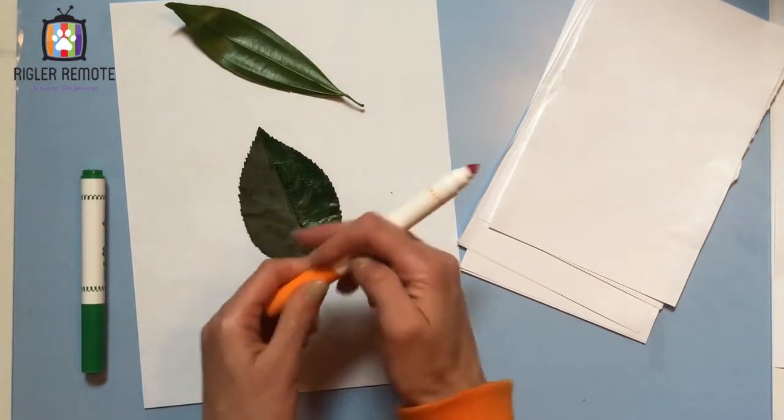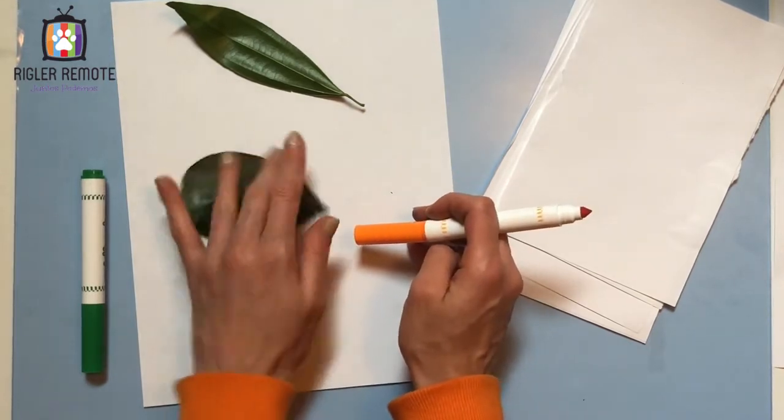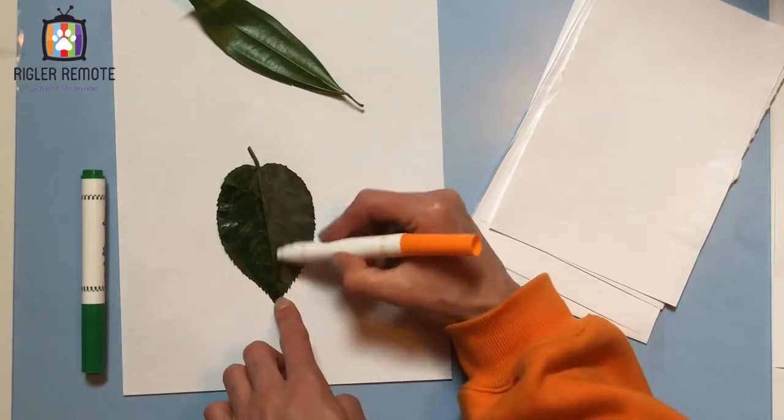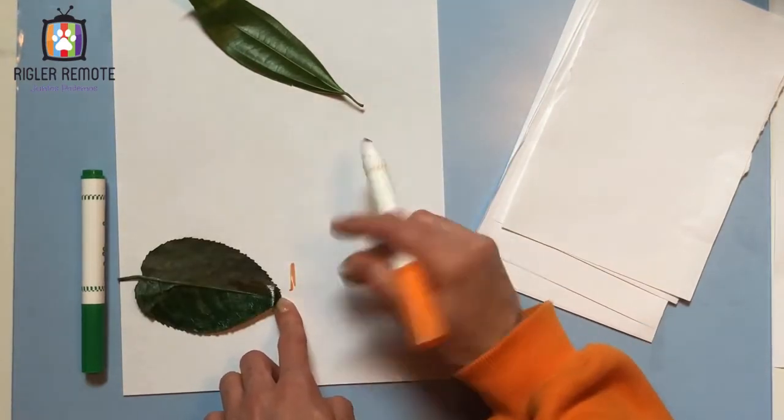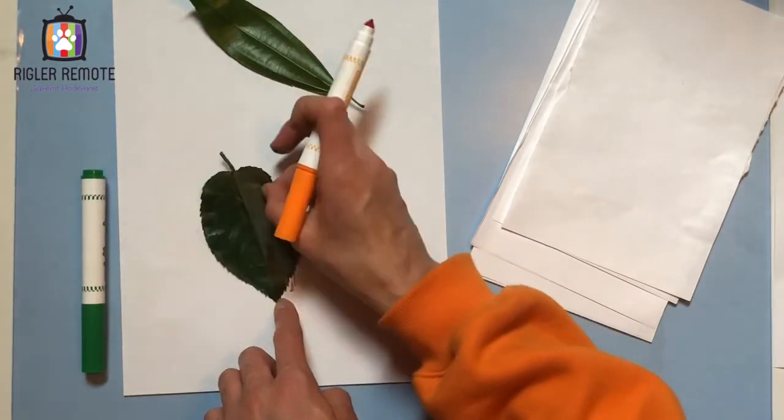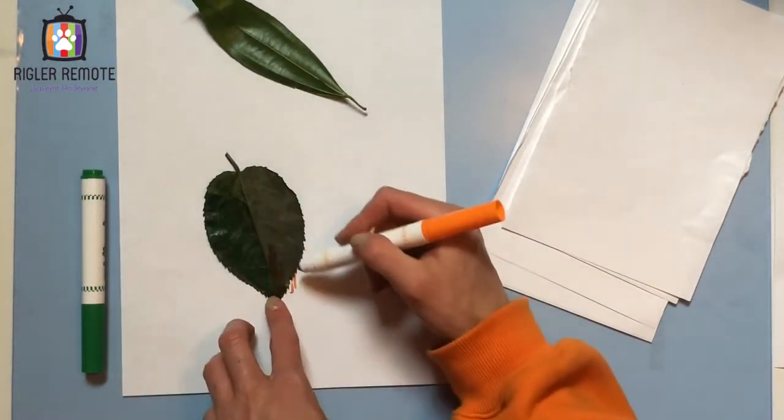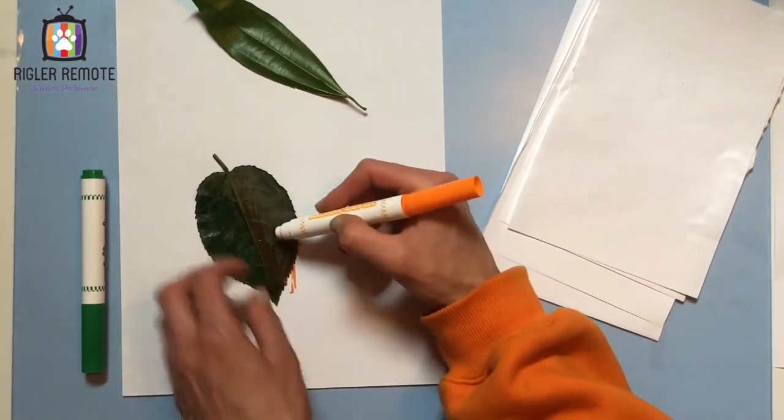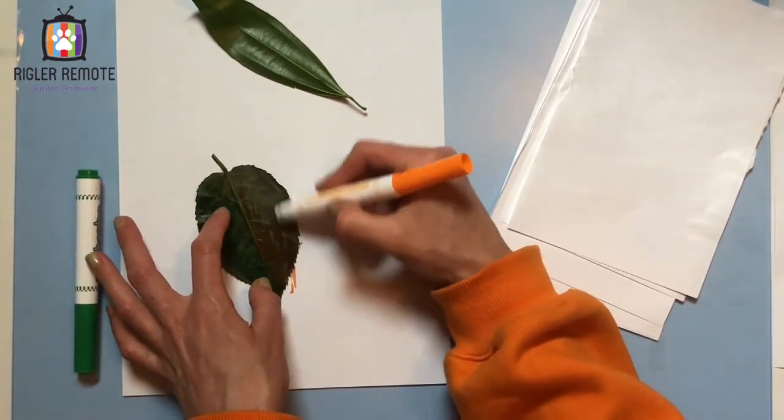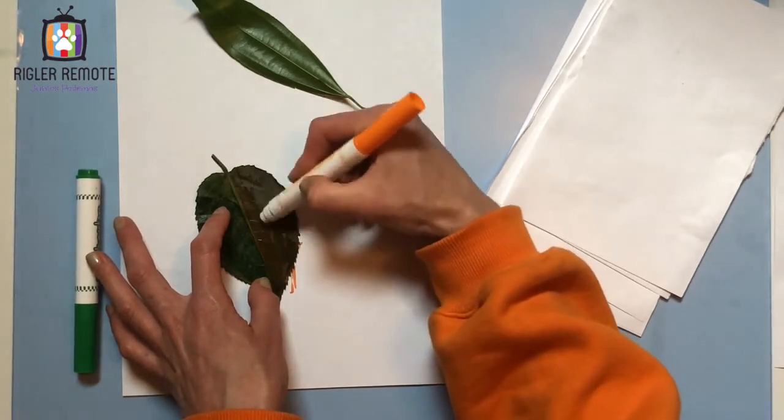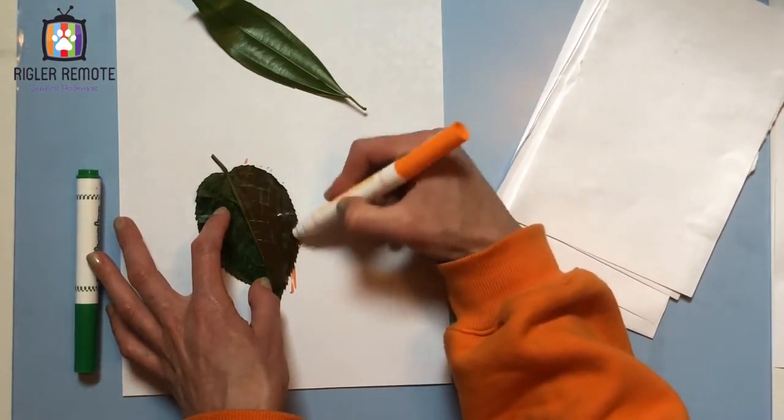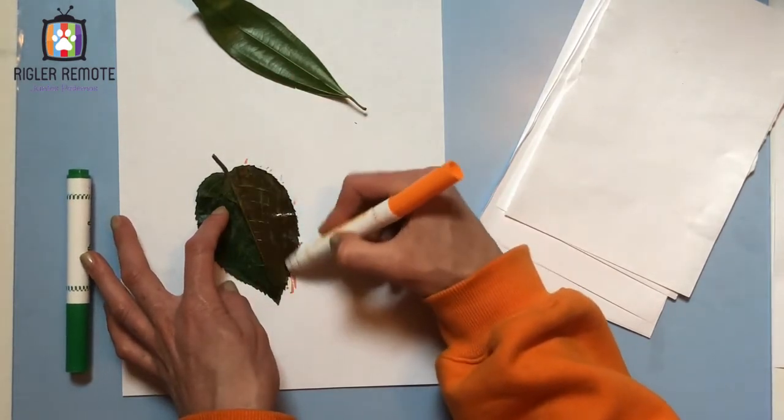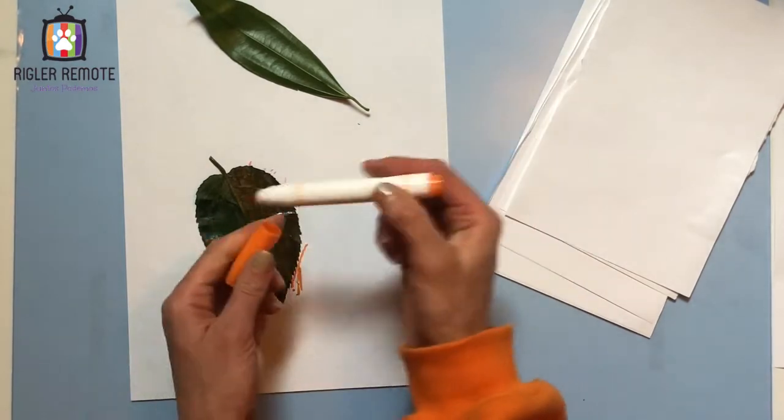And now I'm going to do orange on this side. Actually going to turn this around. And notice this is exactly why I have this paper here. So if something like that happens where the leaf moves, then the ink doesn't get all over my table. It can just get on my scratch piece of paper. This looks pretty good. It's all filled in. Cap your marker.